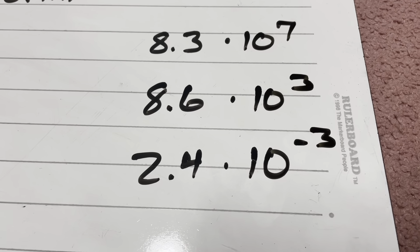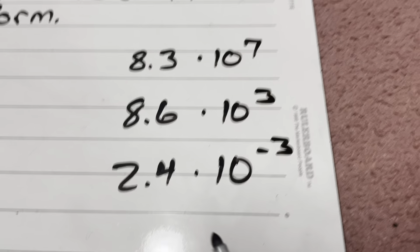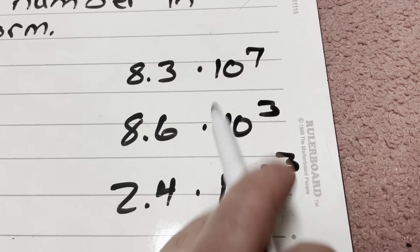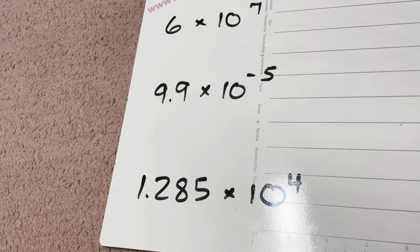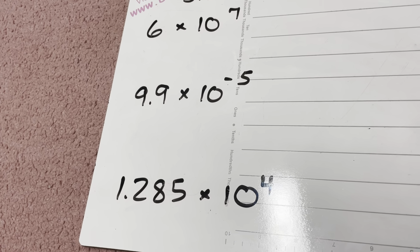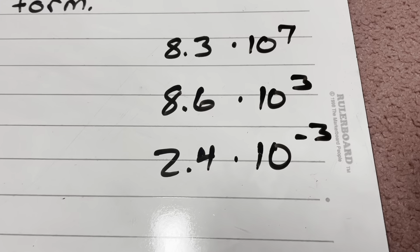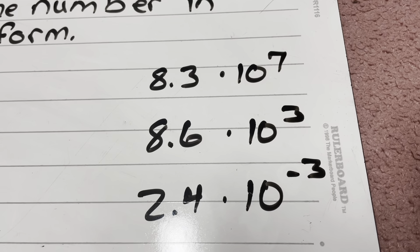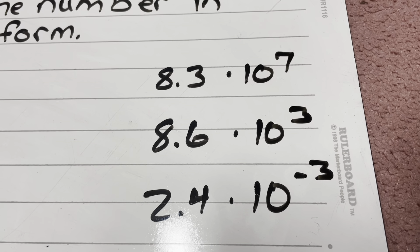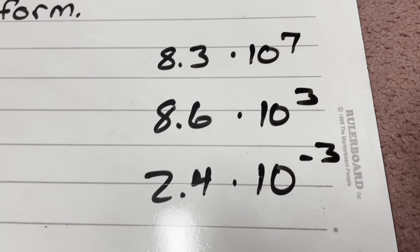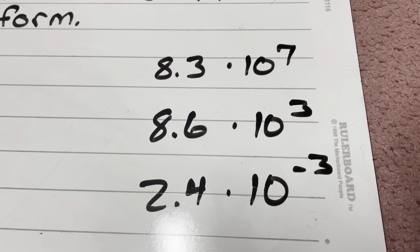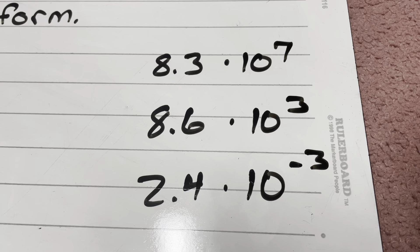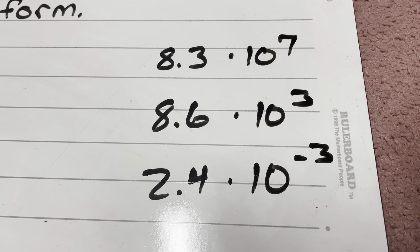For a number to be in scientific notation, it has to be written as a multiplication problem. Your book and these examples over here that we'll do in a few minutes have multiplication used as x, but here we're going to use just the dots to show multiplication. A couple of rules where all three of these examples apply and are written in scientific notation.